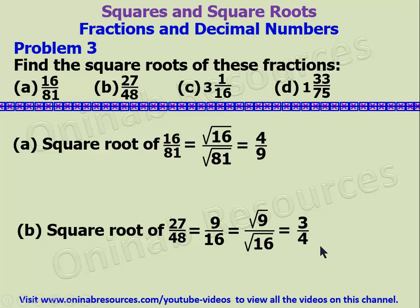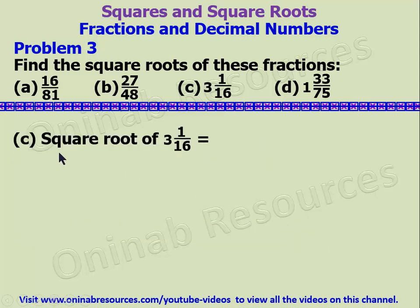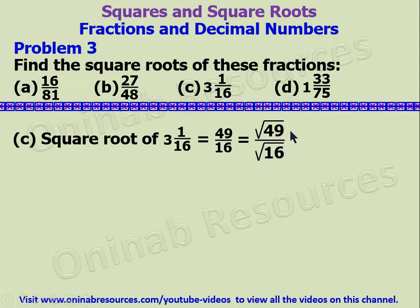Then we go to C: find the square root of 3 whole number 1 over 16. We change this to an improper fraction: 16 times 3 gives 48, plus 1 gives 49, so we have 49 over 16. The square root of 49 over the square root of 16: the square root of 49 is 7, and the square root of 16 is 4. So we have 7 over 4 as the square root of 3 whole number 1 over 16. Expressed as a mixed fraction, that is 1 whole number 3 over 4.